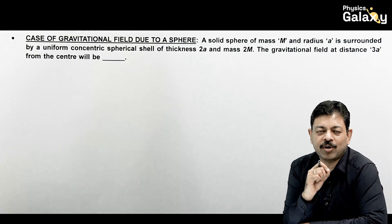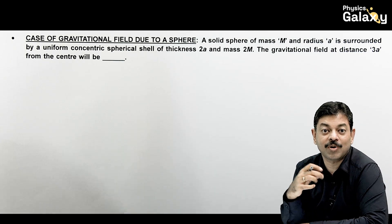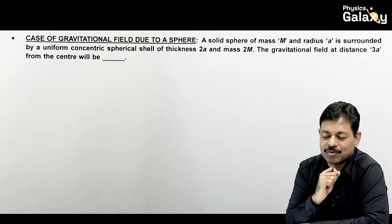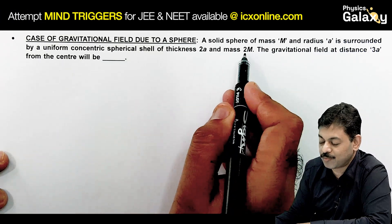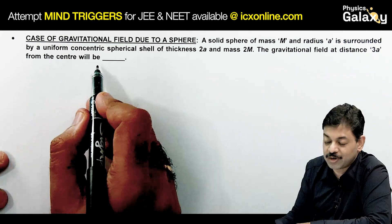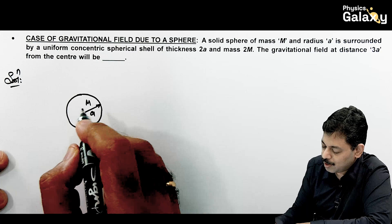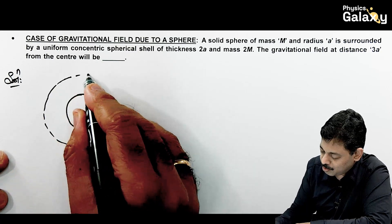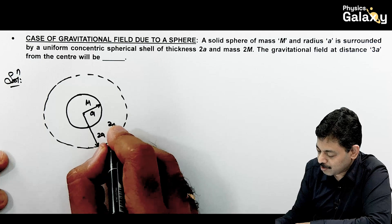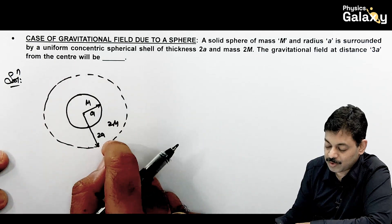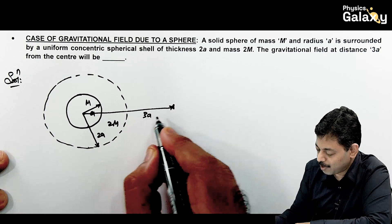This is a base-level question for calculation of gravitational field due to a sphere. The concept remains the same: for any spherical region, the gravitational field expression remains the same. A solid sphere of mass m and radius a is surrounded by a uniform concentric spherical shell of thickness 2a and mass 2m. We need to calculate the gravitational field at a distance 3a from the center.